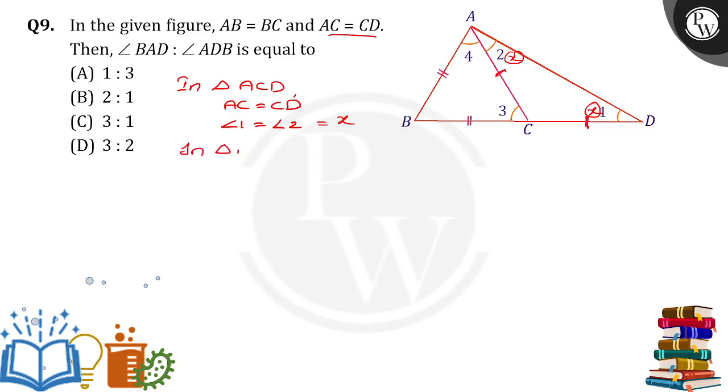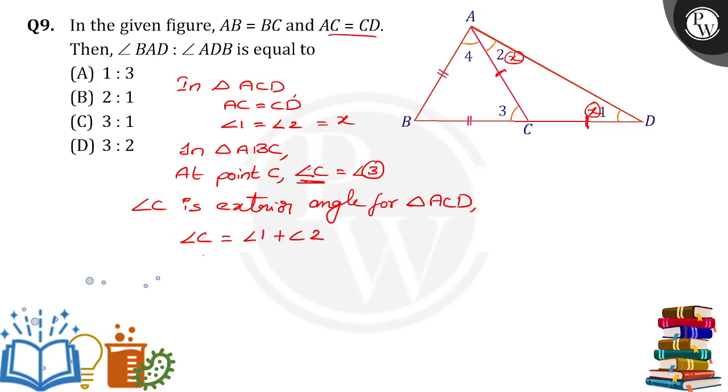Now in triangle ACD, at point C there is angle 3. Angle C is equal to angle 1 plus angle 3. This angle C is nothing but the exterior angle for triangle ACD. Then angle C is equal to the sum of angle 1 plus angle 2. Angle 3 is equal to X plus X, that is equal to 2X. This value will be 2X.